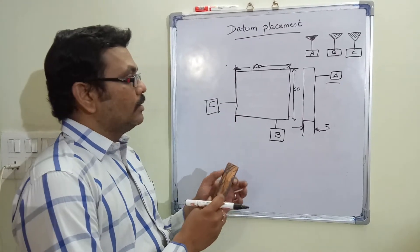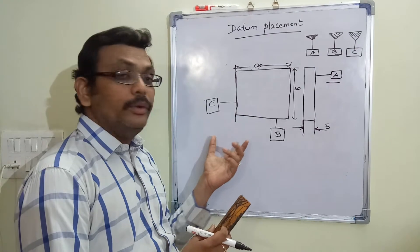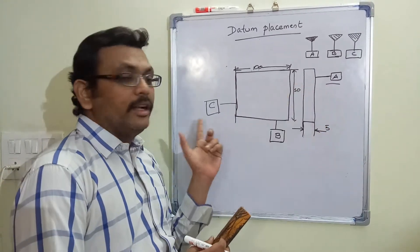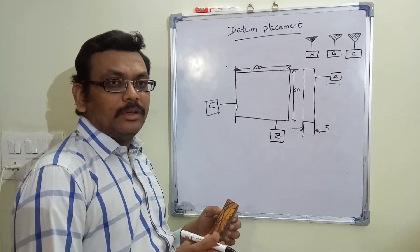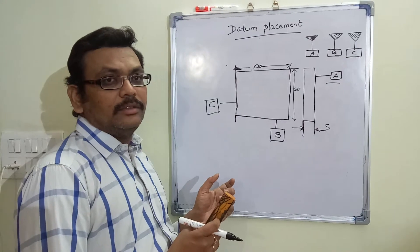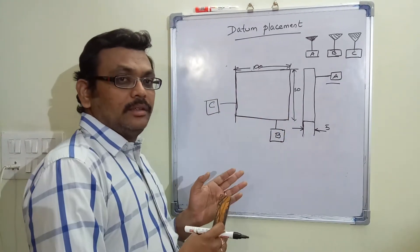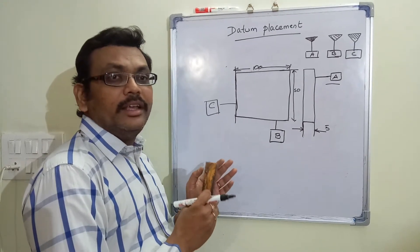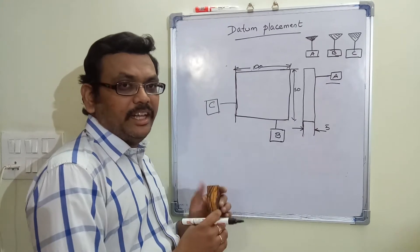The next step is qualifying the datums. We have to qualify, or use, all the datums in a feature control frame — that means we call this qualifying datums. Whatever datums or however many datums you take, all the datums should be qualified in a feature control frame with the help of GD&T.